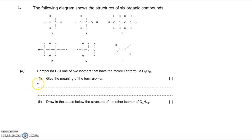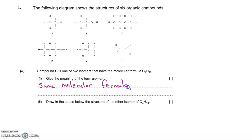In this first question we have six organic compounds. Compound A is ethane, an alkane. Compound B is ethanol, an alcohol. Compound C is butane, another alkane. Compound D is propan-1-ol, an alcohol. Compounds E and F are alkenes. The question asks you to define the term isomer. An isomer has the same molecular formula but a different structural formula. If you said same molecular formula but a different structure or different structural formula, you get one mark.